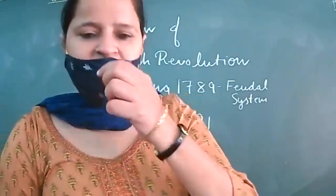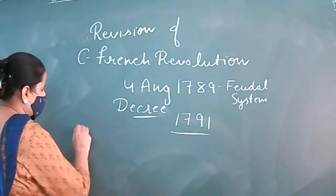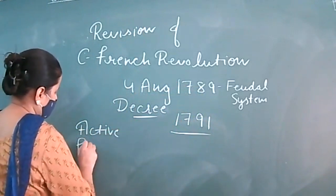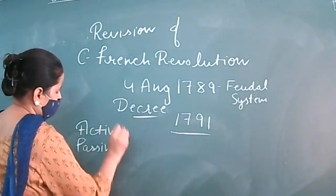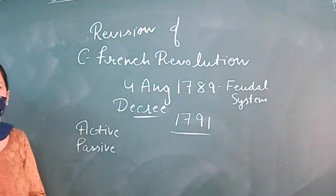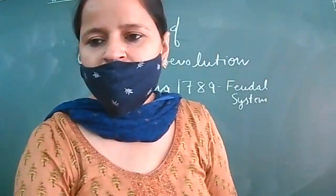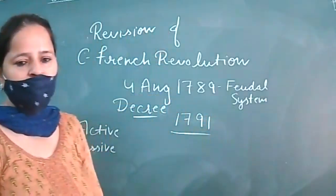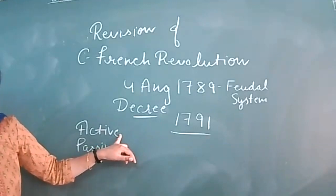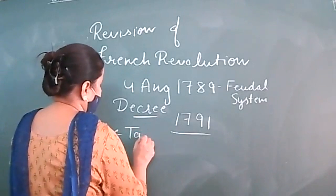Now let's do the Constitution of 1791. What are its features? According to this constitution, citizens were divided into two parts: active and passive citizens. Active citizens are all men aged 25 years or above — not women — who pay taxes.